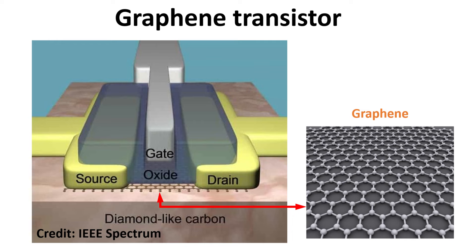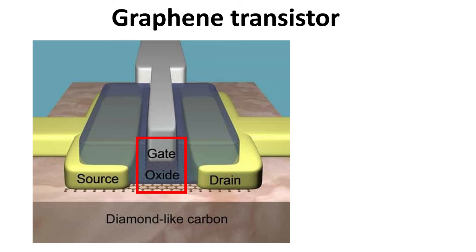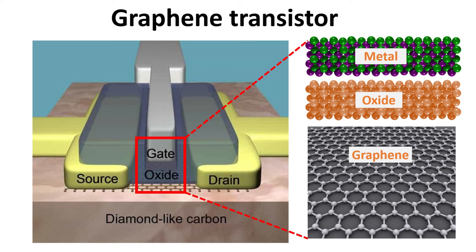Consider a graphene field effect transistor device as shown. Carrier densities in graphene are tuned through the field effect, using a capacitor structure consisting of a metal gate, oxide layer, and graphene.